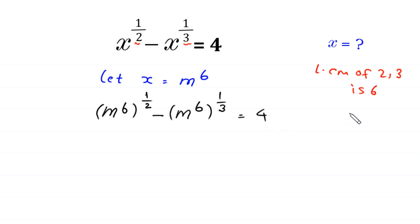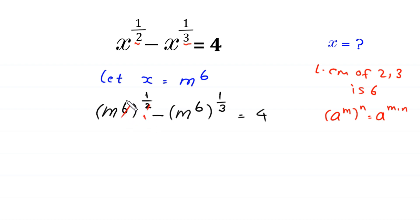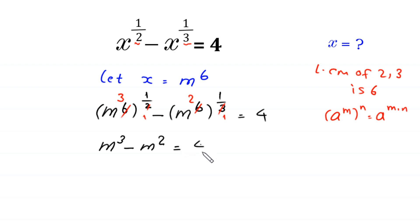Now, by using the rule of exponents — a to the power m, whole to the power n, is equal to a to the power m times n — we multiply power 6 by 1 over 2 to get 3, and power 6 by 1 over 3 to get 2. So here we are left with m cubed minus m squared is equal to 4.